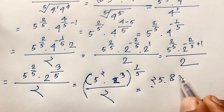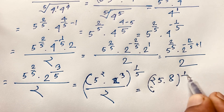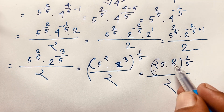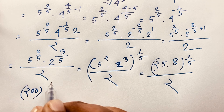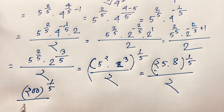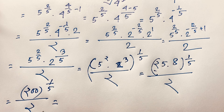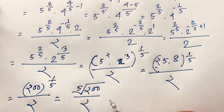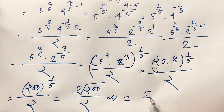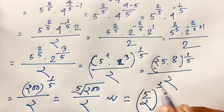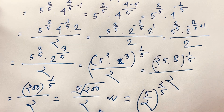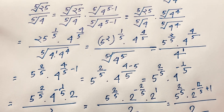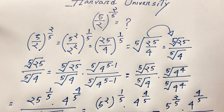Since 5² = 25 and 2³ = 8, we get (25 × 8)^(1/5) over 2 = 200^(1/5) over 2 = the 5th root of 200 over 2. This is our final answer. Thank you all — if you enjoyed this video please subscribe to my channel for other interesting videos. Goodbye, take care!